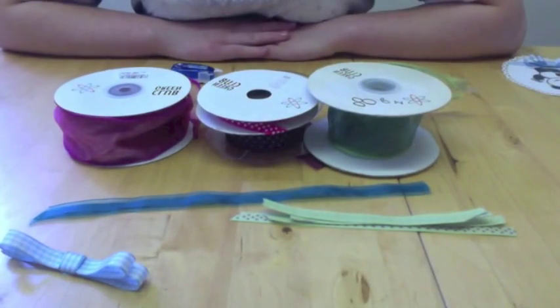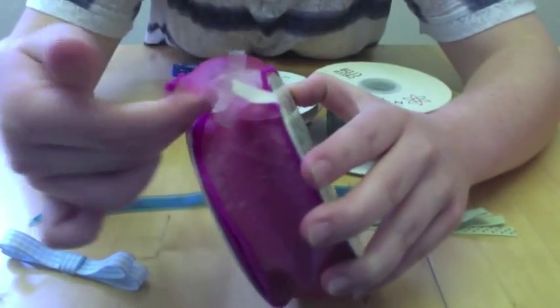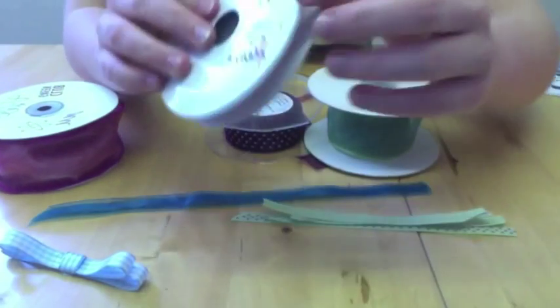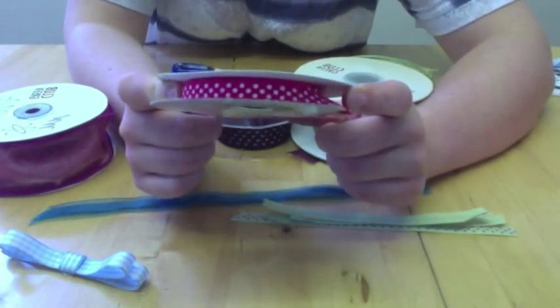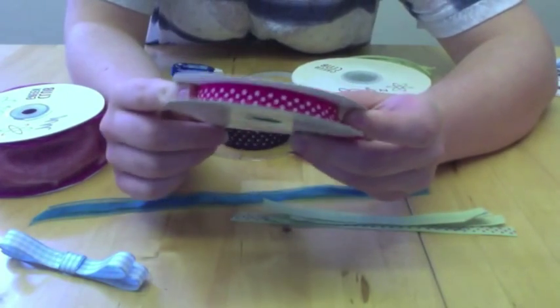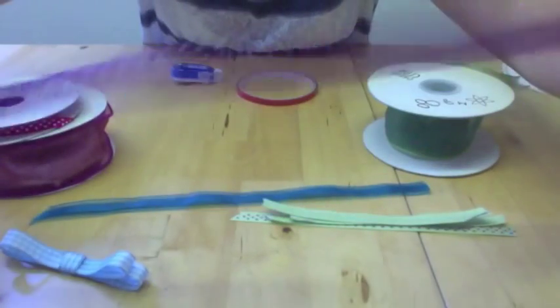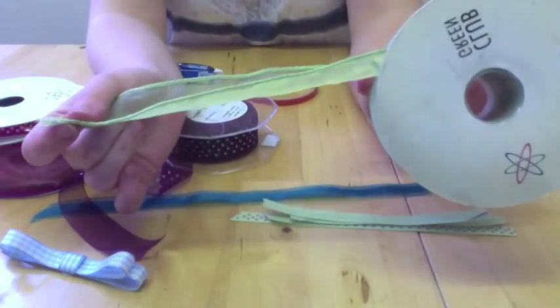You can get all different kinds of ribbon. Here I have an example of wired ribbon and then we have this Bertie Bows ribbon. This makes lovely bows and if you can get a thick ribbon like this it does tie a lot nicer. We have very thin flimsy ribbon and we have again another example of wired ribbon.